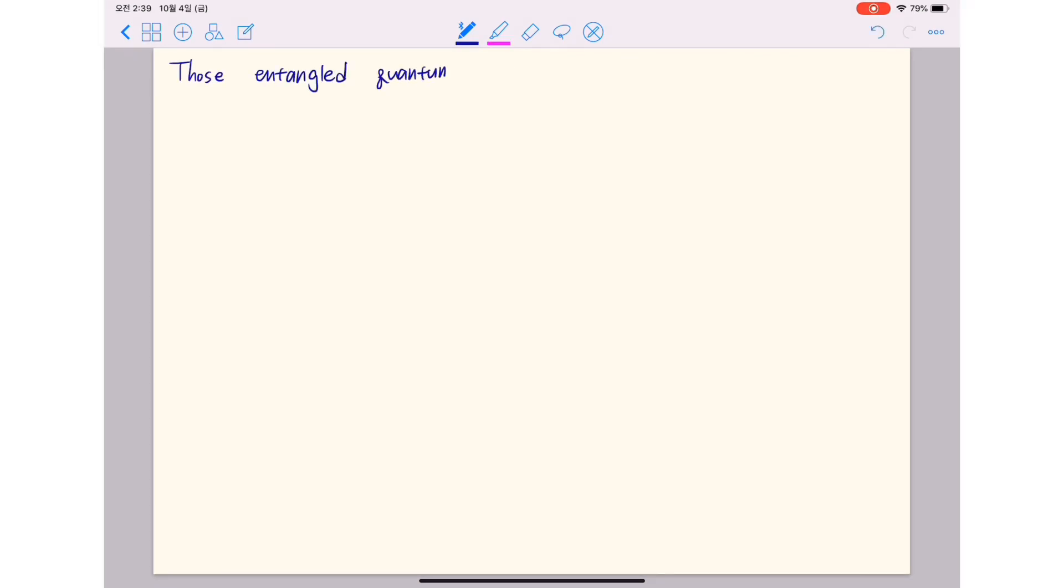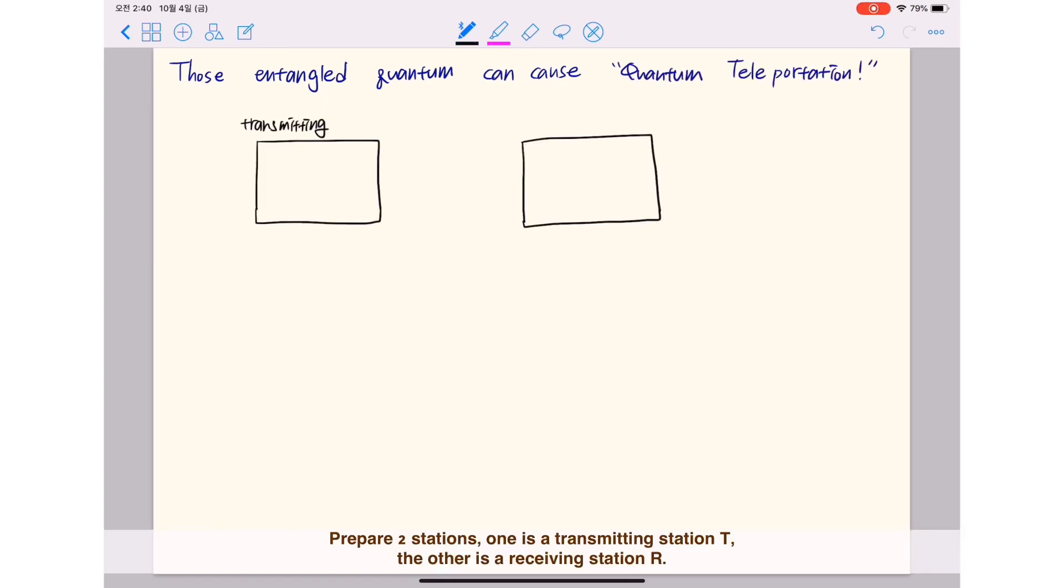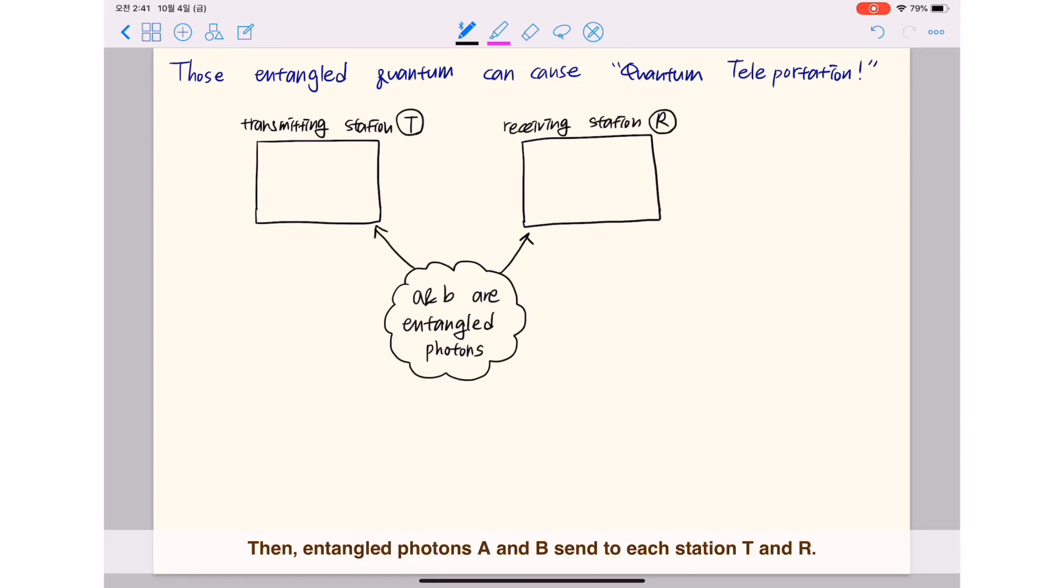Those entangled quantum can cause quantum teleportation. Prepare two stations, one is a transmitting station T, the other is a receiving station R. Then entangled photons A and B send to each station T and R.